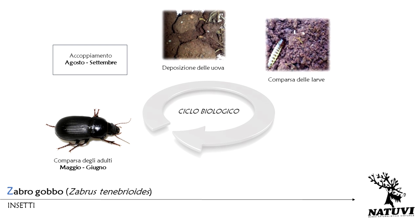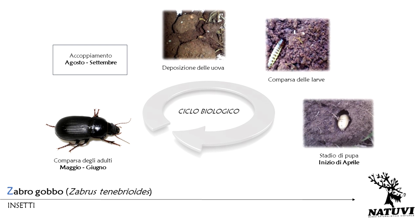Dopodiché si portano sulle parti eduli delle piante per iniziare la loro attività alimentare, che raggiunge il culmine in primavera, quando le stesse larve si portano sulla chioma per alimentarsi al discapito delle foglie. Dopo aver attraversato tre stadi di sviluppo larvale verso l'inizio di aprile, mutano in prepupa e quindi in pupa all'interno di una cella ovale situata nel terreno a circa 15-20 cm di profondità. Tale stadio pupale dura in media dalle due alle tre settimane, al termine del quale compare l'adulto.